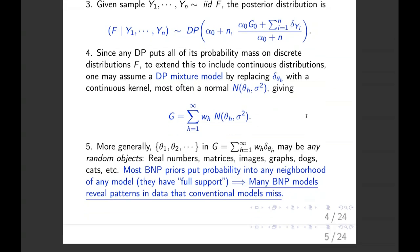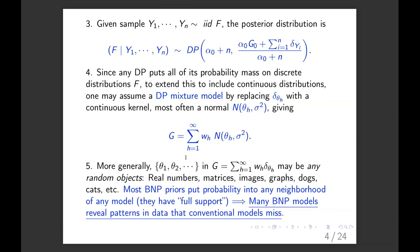But here's the neat thing about it, or a neat thing, is that these thetas here don't have to be real numbers. They can be any random objects. They can be matrices, images, graphs, dogs, cats, anything you like. And so all of this structure can be used to put very flexible probability distributions on any kinds of objects. And people have started to do that, and the results in terms of applications are astonishing.